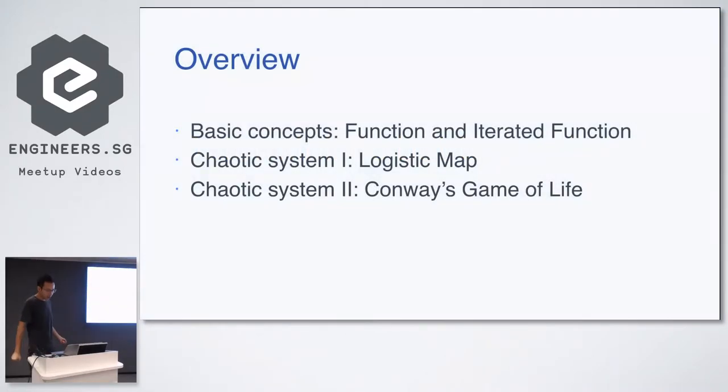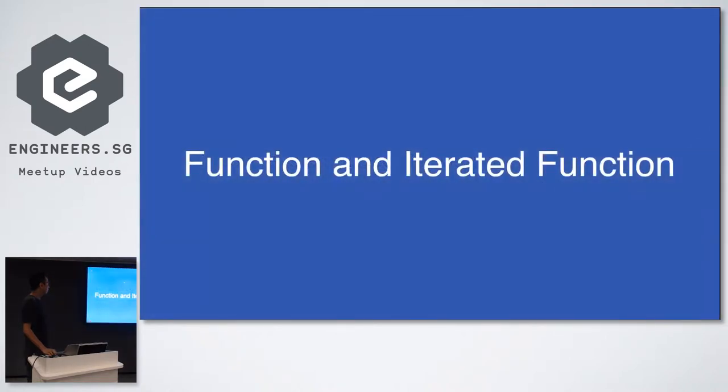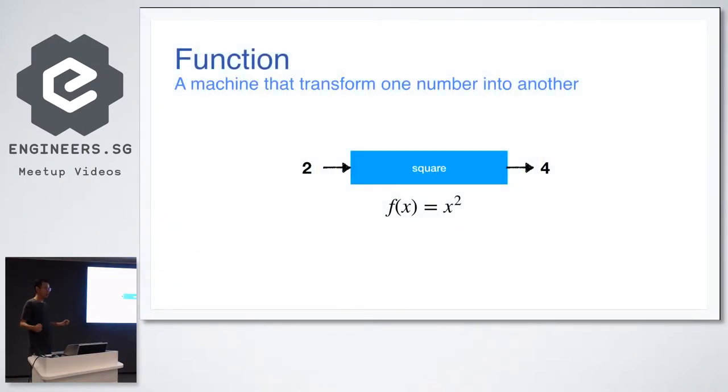So I'll start with some basic concepts, namely functions and iterative functions. And then we'll look at two interesting problems or systems: logistic map and Conway's game of life. So, functions. You can view it as a machine that transforms one number to another. In mathematical context, people say it's an expression or equation that takes in a number and generates another number. For example, two in a function called square, the output will be four. If I put three inside, I get nine out.